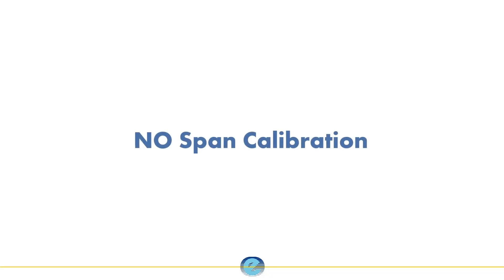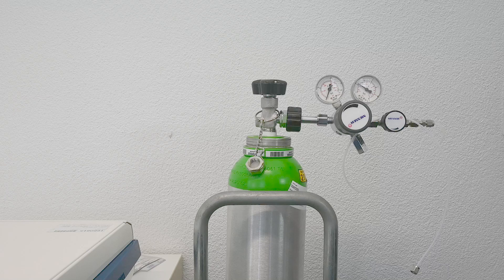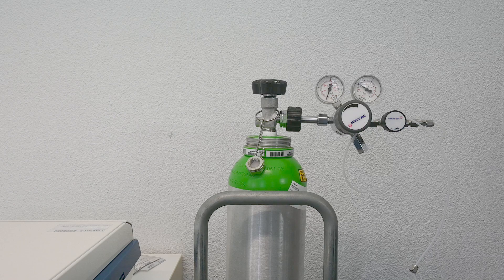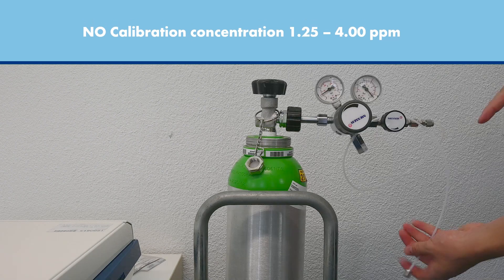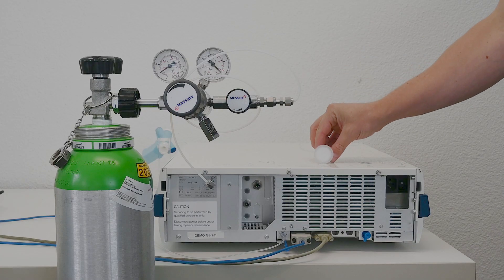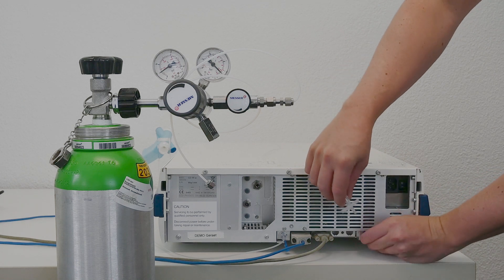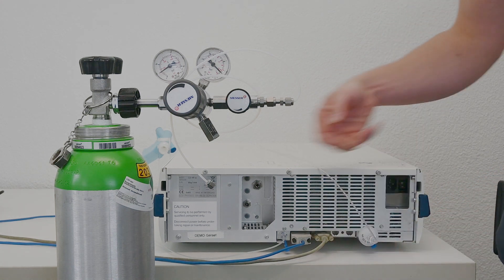For the NO span calibration, you need calibration gas with a concentration of between 1.25 to 4 parts per million nitric oxide in nitrogen gas. Connect the sample tube with the sample filter attached to the calibration port on the rear of the analyzer.